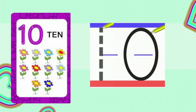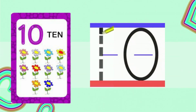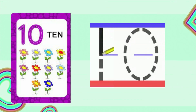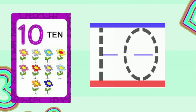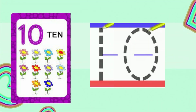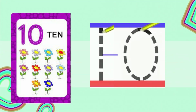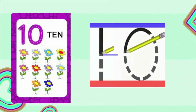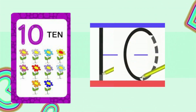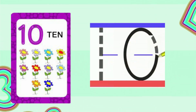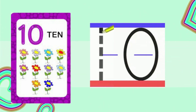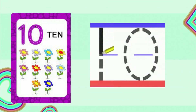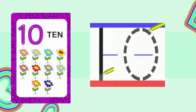To write the number 1, we will start at the top and do a straight line down. To write 0, we will start at the top and do a circle all the way around.